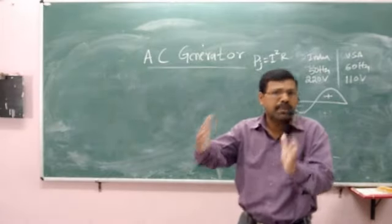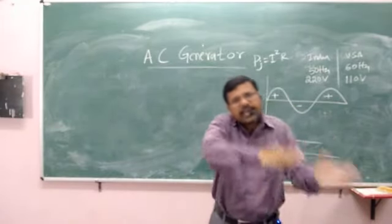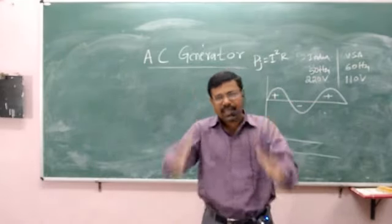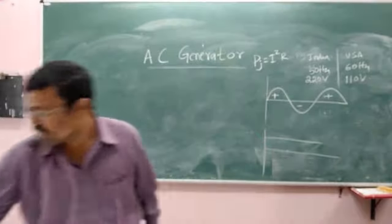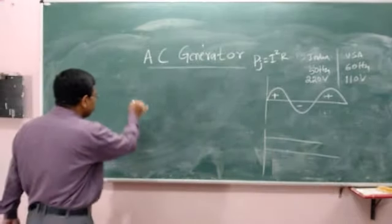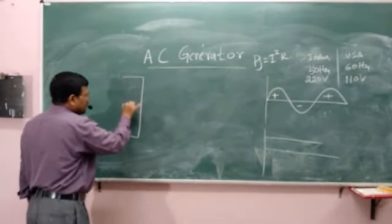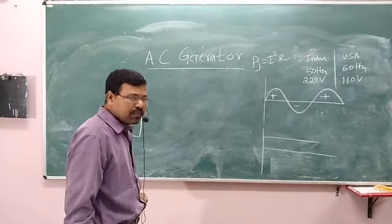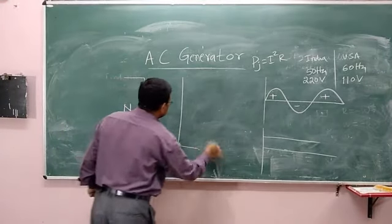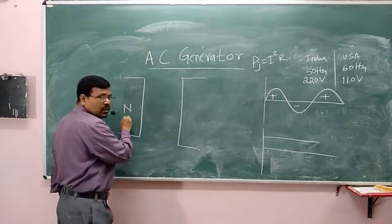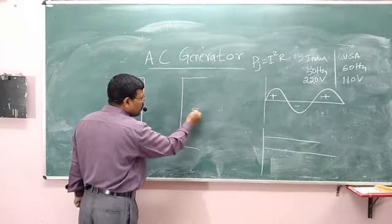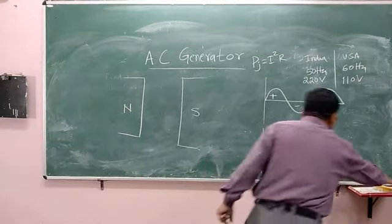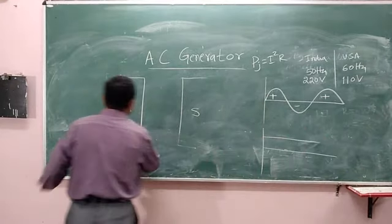AC generator basically converts mechanical energy to electrical energy. Let us see the construction of AC generator. A strong electromagnet is used, which contains North and South poles.